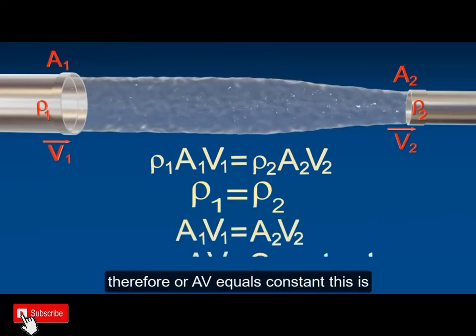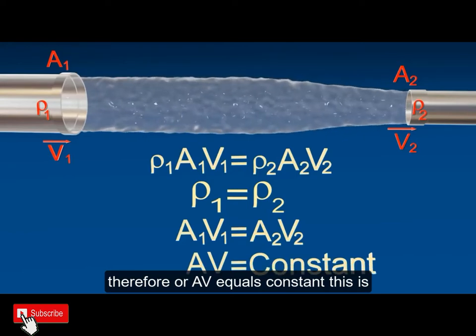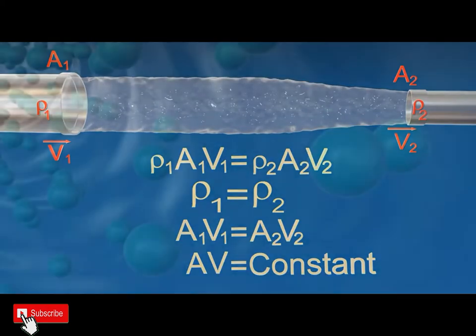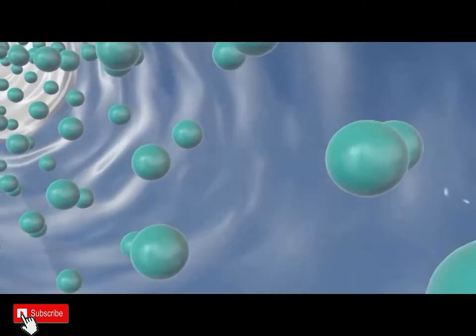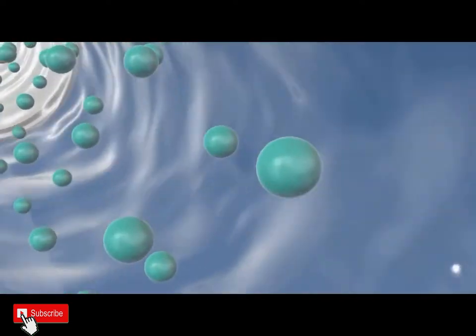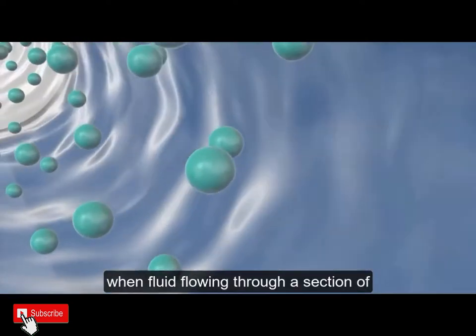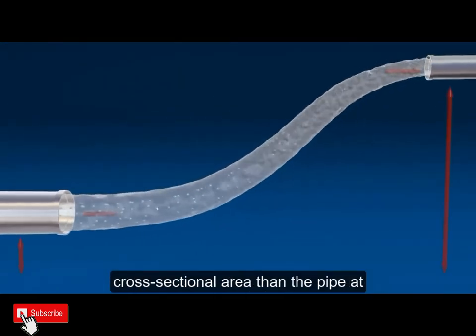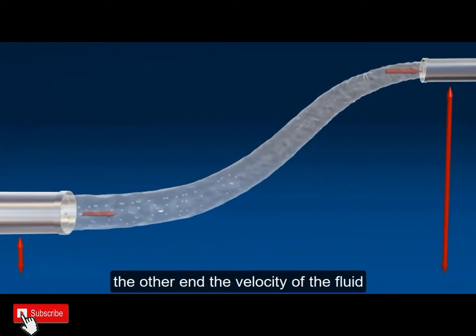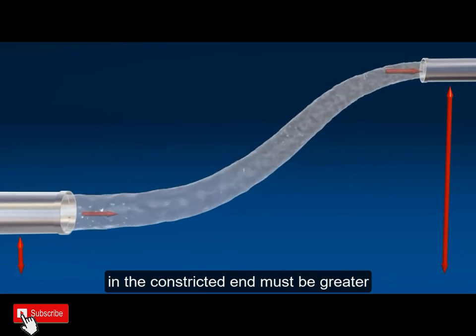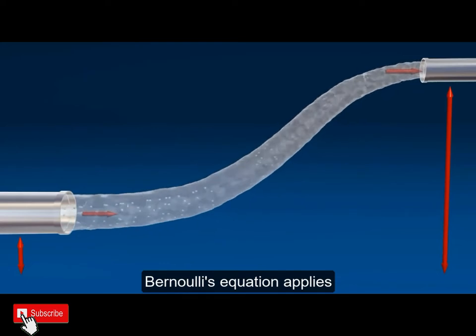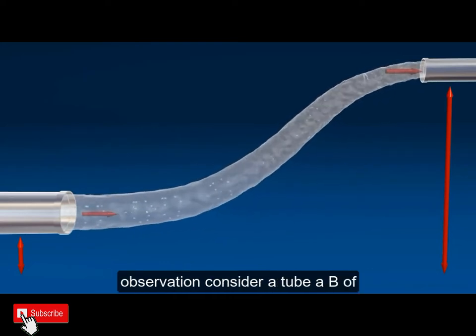Or AV equals constant. This is the equation of continuity. When fluid flowing through a section of pipe with one end having a smaller cross sectional area than the pipe at the other end, the velocity of the fluid in the constricted end must be greater than the velocity at the larger end. Bernoulli's equation applies conservation of energy to formalize this observation.